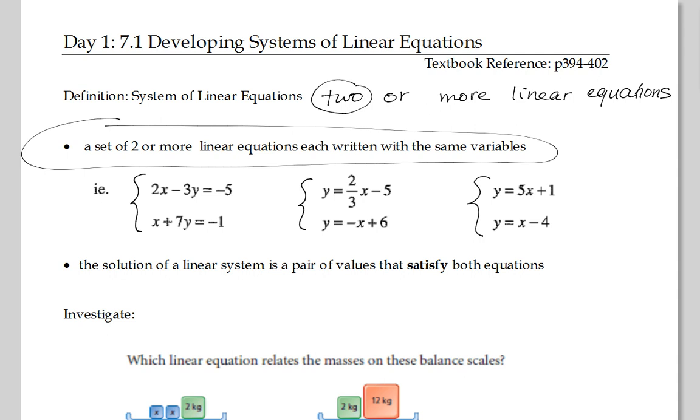And the solution, this next bullet, the solution here is a pair of values that satisfy both equations. So you need to find some x comma y, this is on the whiteboard, that satisfies both equations. And as you can see on the whiteboard, it's where the two lines cross. It's where the two graphs meet each other.